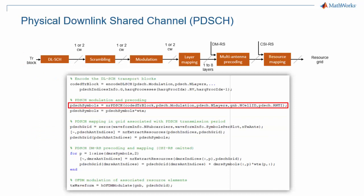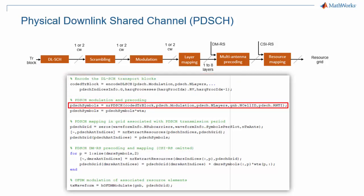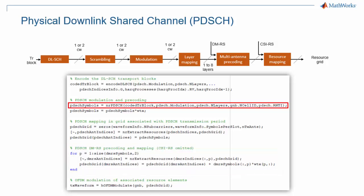Here we can see code for complete downlink data processing in MathWorks 5G Toolbox. The PDSCH processing stage is highlighted, but you can also see the DLSCH stage, as well as the insertion of demodulation reference signals, or DMRS.